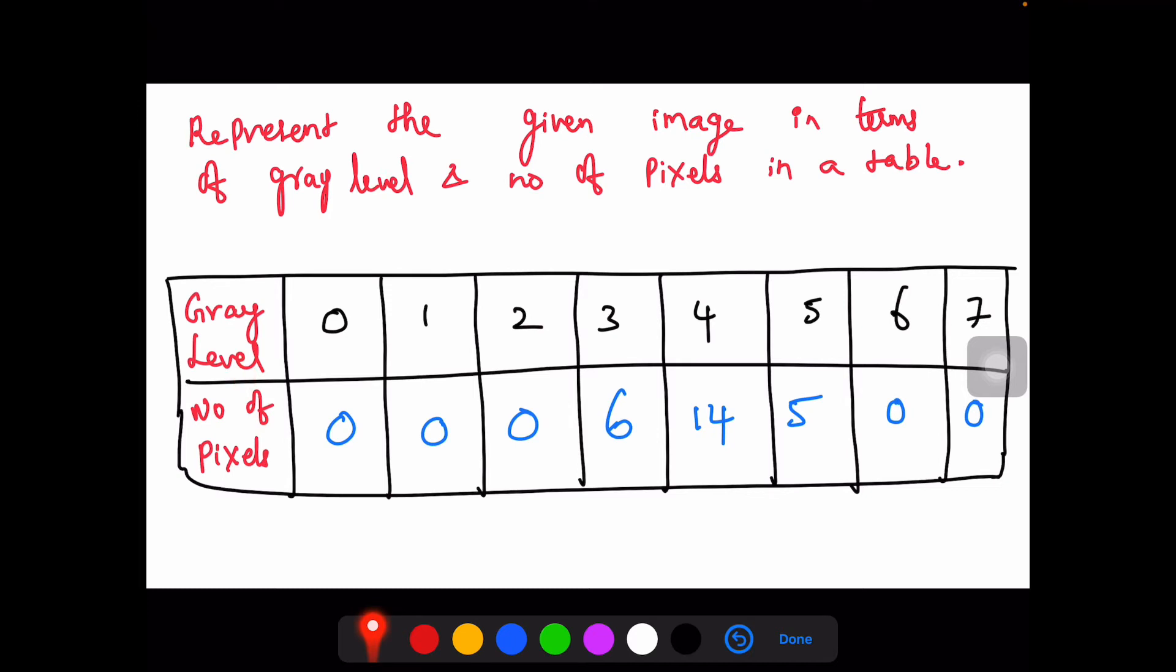Let us represent in a table form so it will be easy to analyze. The gray level, let us assign from 0, 1, 2, 3, 4 to 7. Count how many number of 0s, 1s, 4s and 7s are there. Just count the occurrences of the gray pixels and make it as a table.